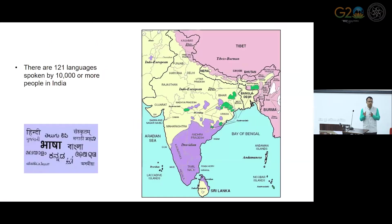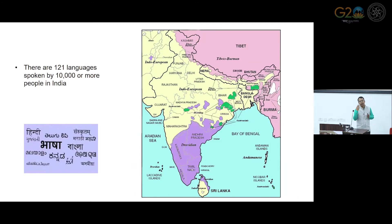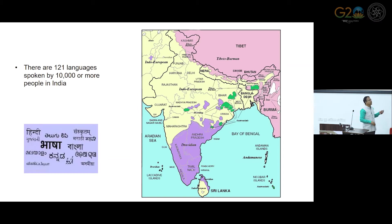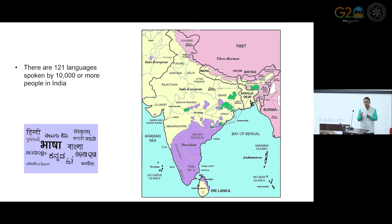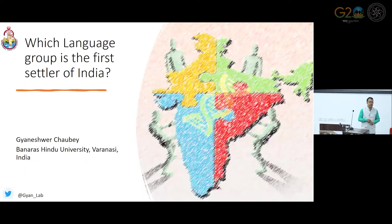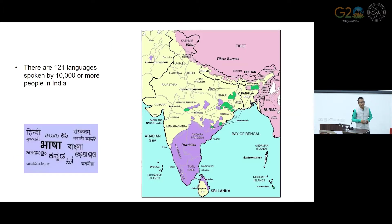Overall, the Indian population is currently divided into four major language groups. The Indo-European language group covers most of the country, whereas Dravidian is restricted to southern India. At the Himalayan fringes there are Tibeto-Burman groups, and Austro-Asiatic speakers are present in pockets. There are also a few linguistic isolates, and the Indian population is divided into many other sub-groups.